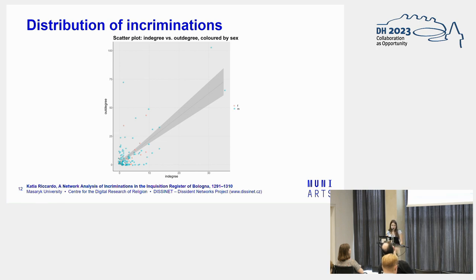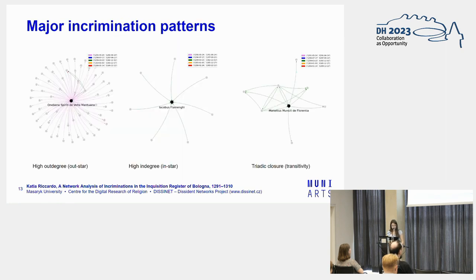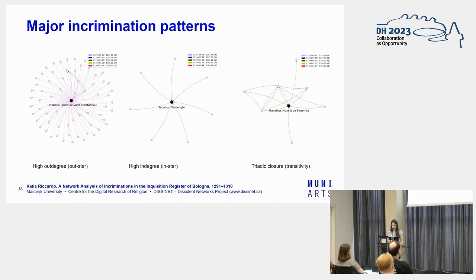Next, I want to show in detail a few major incrimination patterns — someone with a high out-degree on the left and someone with a high in-degree. The first case here is Catherine, an older man who recalls events that took place up to 40 years beforehand. He names 72 people, all from past interactions and travels. None of them are actually tried, so this stays a network with incriminations starting only from him.